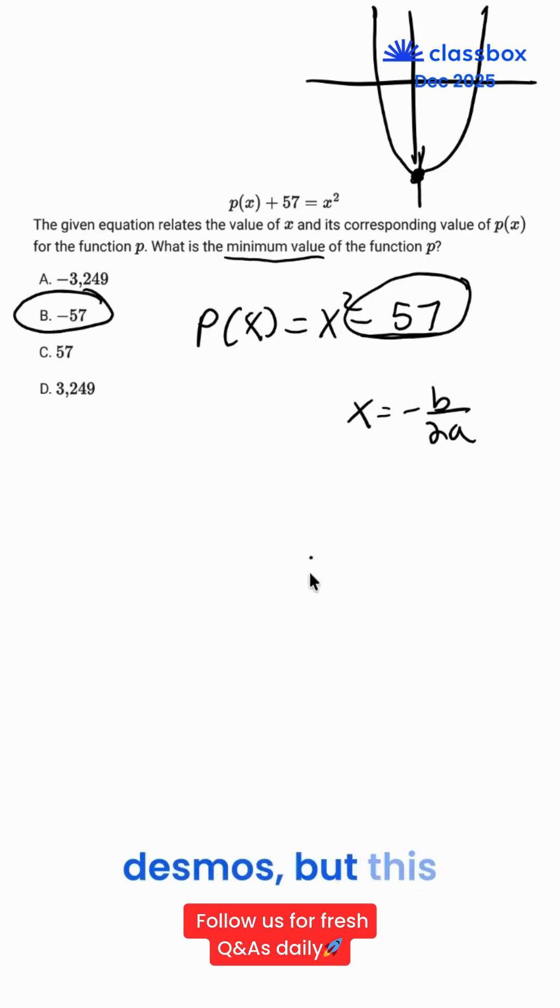Now, usually I say to put this into Desmos, but this question in particular was easier to solve without going to Desmos, because we could have easily witnessed that negative 57 was our minimum value, as it is our y-coordinate of our vertex.